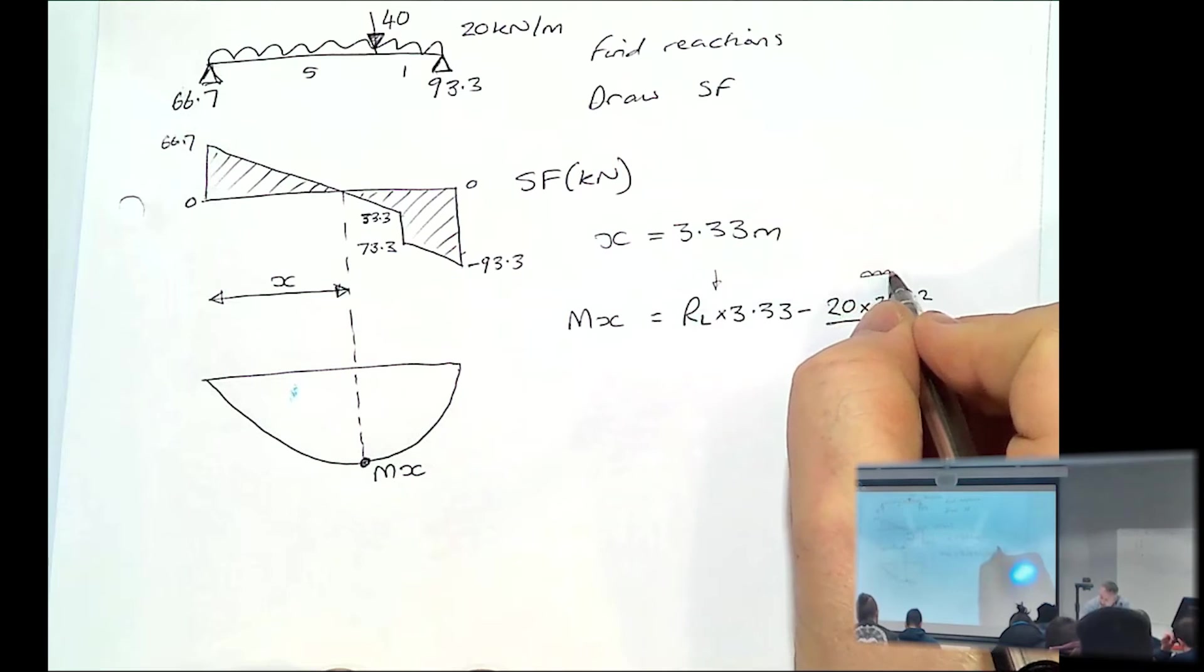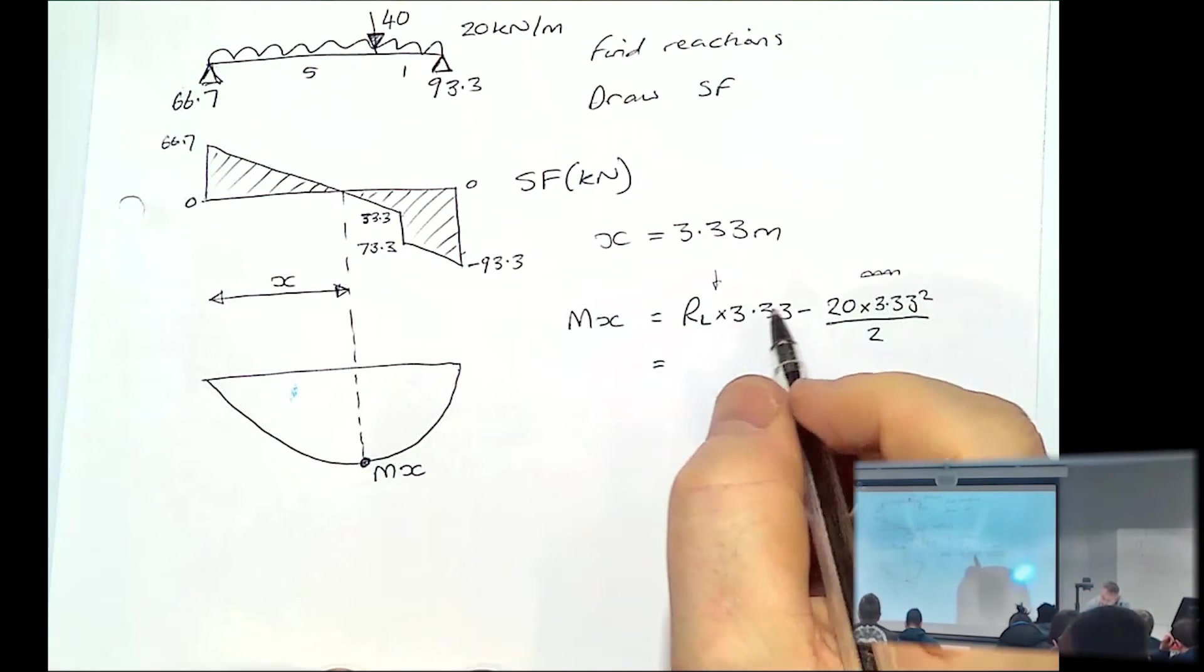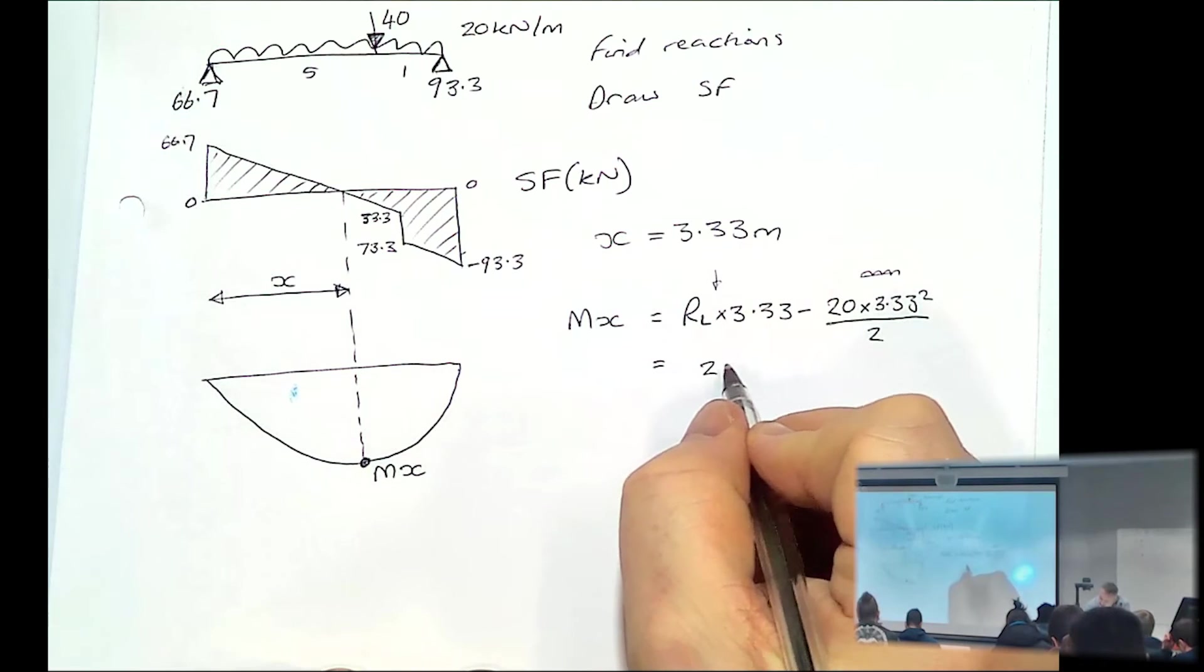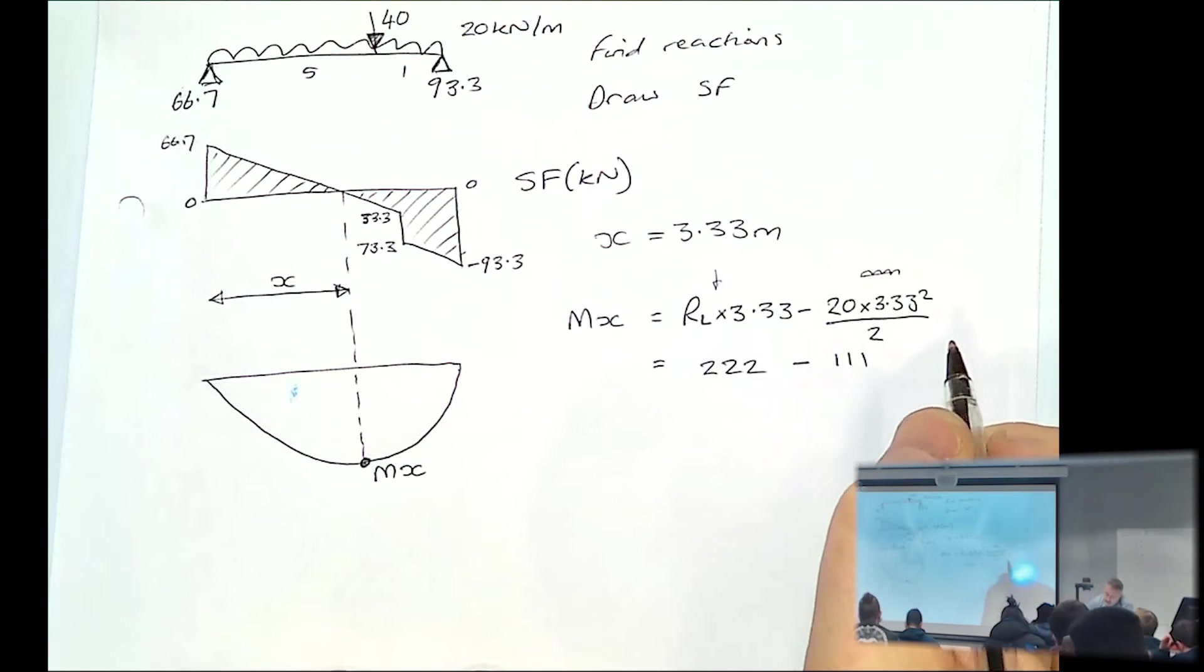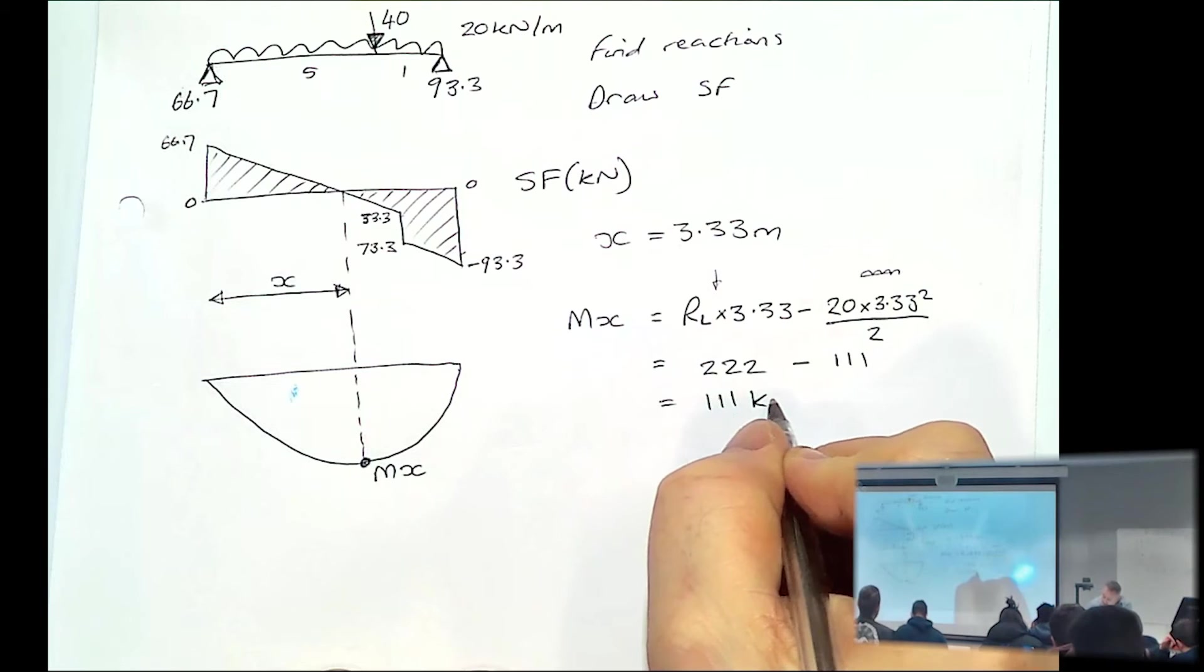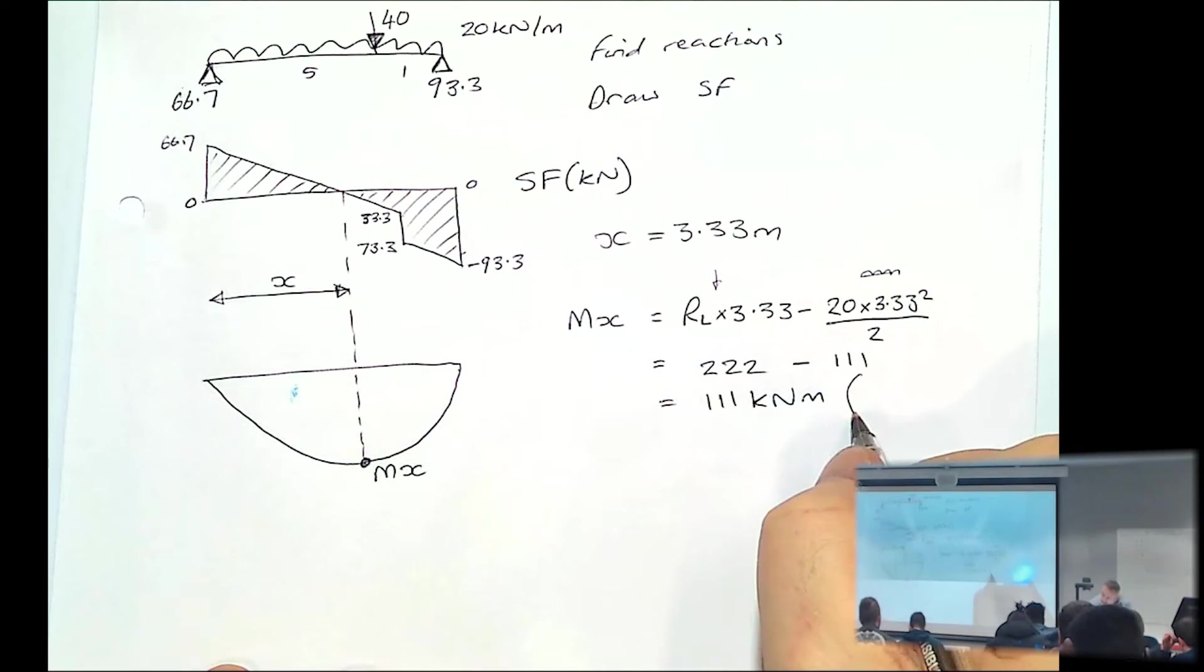And that's the UDL. That RL is 66.7. So we end up with 222, take away 111, which ends up with 111 kilonewton metres, or 111 times 10 to 6 Newton millimetres.